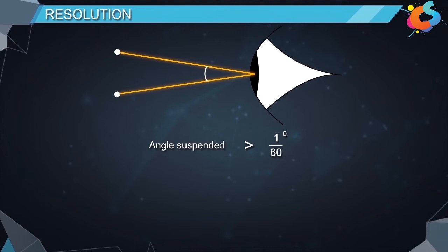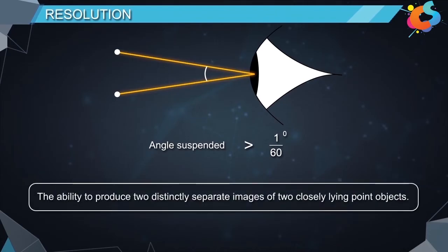Based on this, resolving power of an optical instrument is defined as the ability to produce two distinctly separate images of two closely lying point objects.